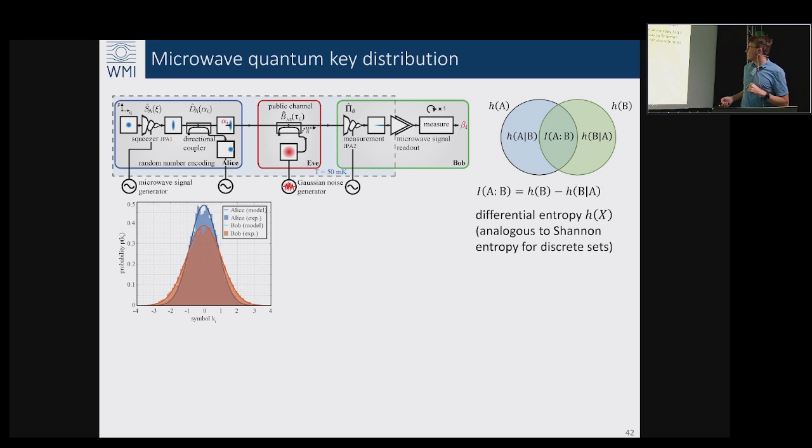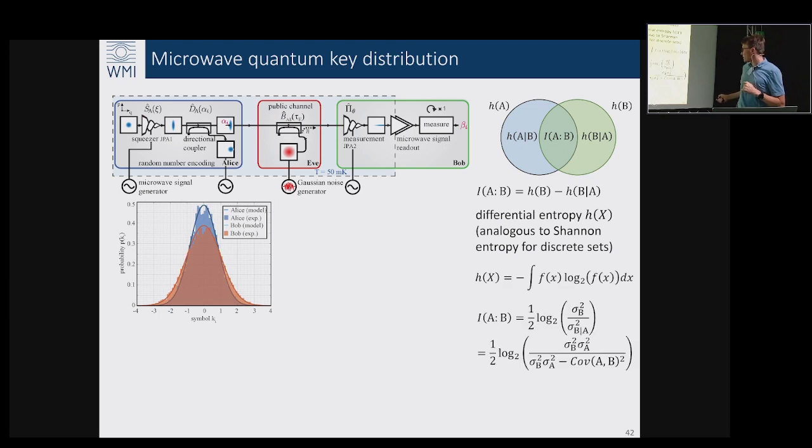The next step for us was to calculate how much mutual information is distributed between the parties. Here you use the differential entropy which can be related essentially to the distribution of σ_B which can be measured from this histogram and σ_A and corresponding to their covariances, which allows us to estimate how much information Alice and Bob have shared.